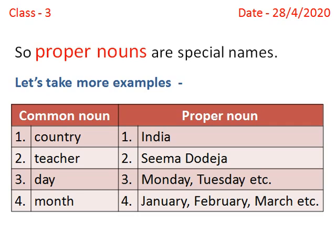Month is a common noun, whereas names of months like January, February, March, etc. are proper nouns.